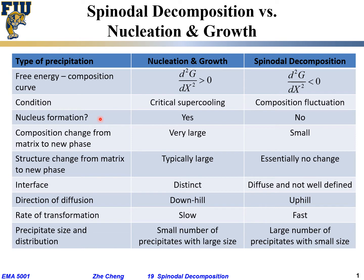In terms of whether the phase transformation involves a distinct nucleus, spinodal decomposition involves no nucleus formation at the very beginning stage — you cannot really tell what part is a new phase and what part is the matrix or host phase. For nucleation and growth, the new phase formed is very different from the matrix, and you can easily identify which portion is the nucleus. The composition change from the host to the new phase is very very small initially in spinodal decomposition, almost impossible to tell the difference.